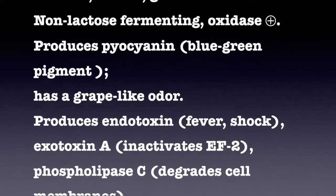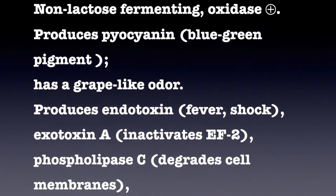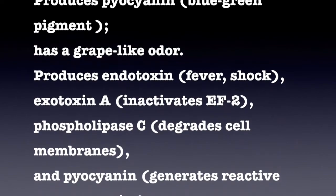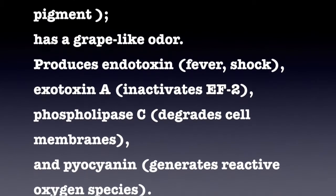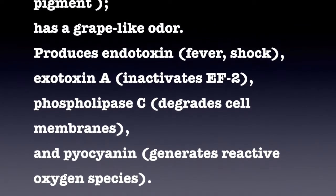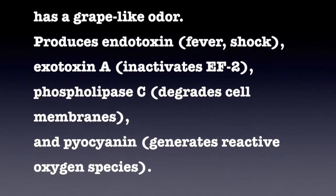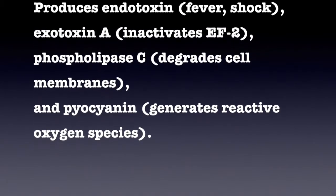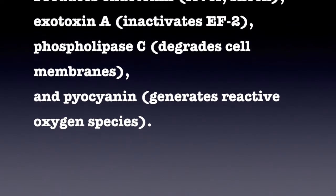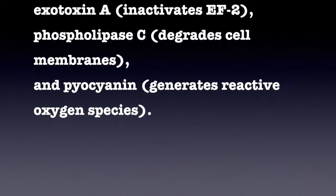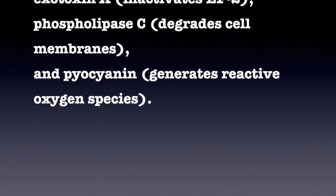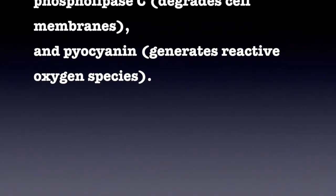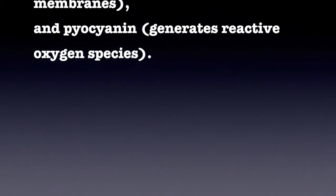It produces endotoxin, causing fever and shock. It also produces exotoxin A, which inactivates EF2, and phospholipase C, which degrades cell membranes. Pyocyanin generates reactive oxygen species.